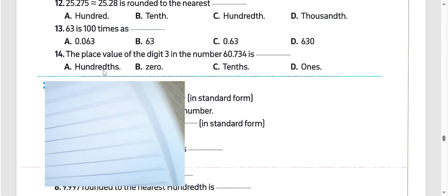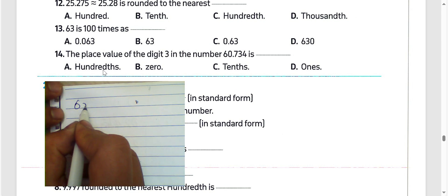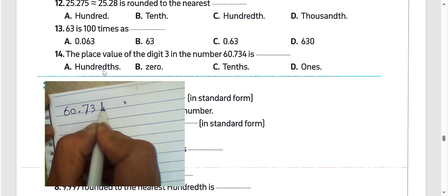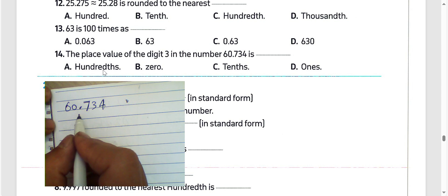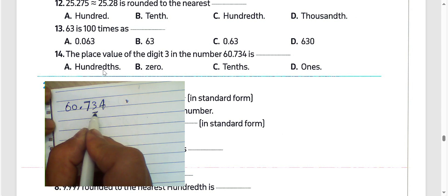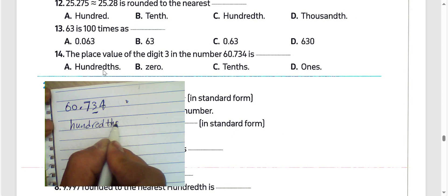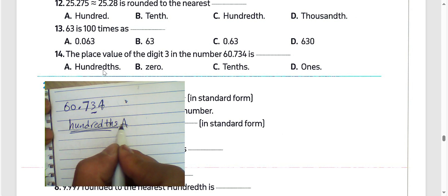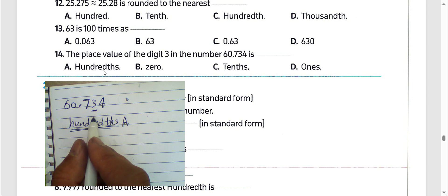Question number 14: the least place value of digit 3 in the number 60.764 thousandths — digit 3 lies in the hundredths place. Choose letter A.